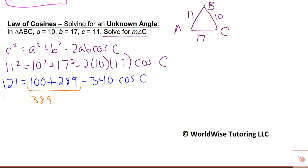Bring everything else down. We can subtract the 389 from both sides. And now to get rid of that negative 340, we divide both sides by negative 340.